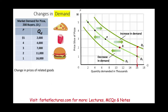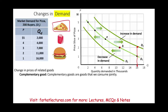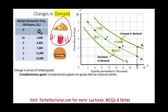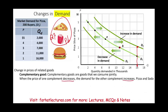Changes in prices of related goods. We have two types: complementary goods and substitute goods. Complementary goods are goods that are consumed jointly — for example, you consume soda with pizza. If the price of Coke goes up, your combined meal price goes up, and the quantity demanded for the whole meal goes down. The opposite is also true: if the price of Pepsi goes down, you have more reason to buy pizza because the complementary soda is cheaper.